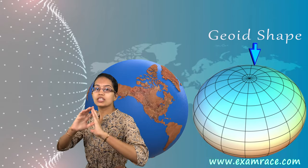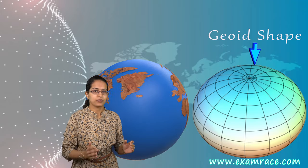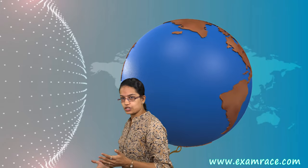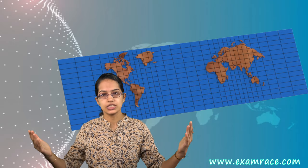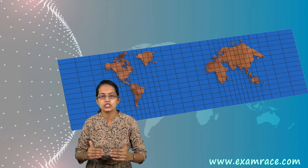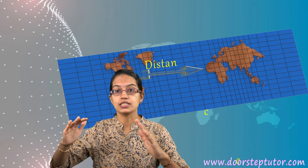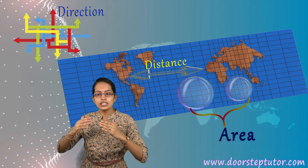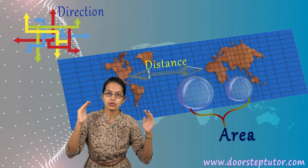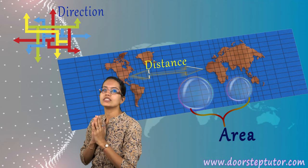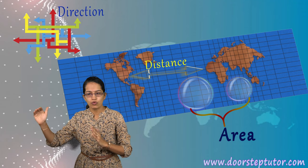Whenever we talk about earth, it's geoid in shape. This geoid shape is pretty interesting because it is a unique three-dimensional shape. When you try to cut it across, it would open up into a 2D or two-dimensional surface, but there would be distortions in terms of distance, area, and direction. These are the three major distortions we would focus on.